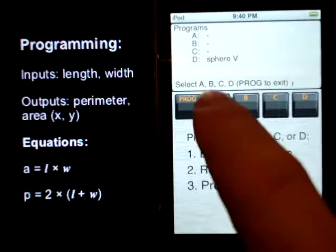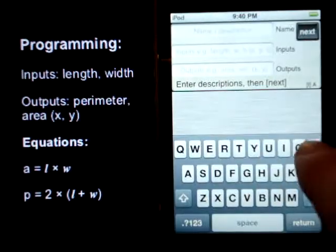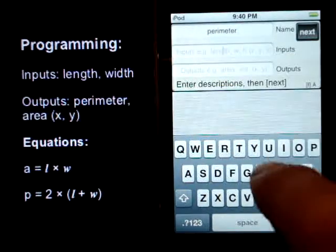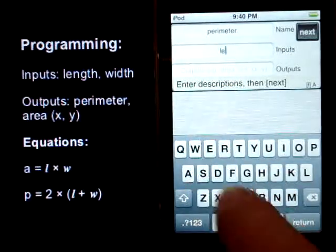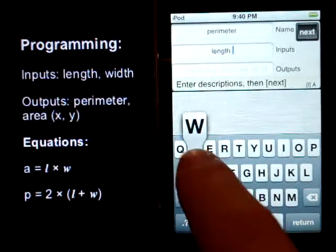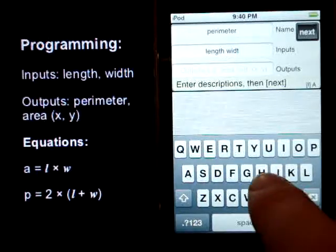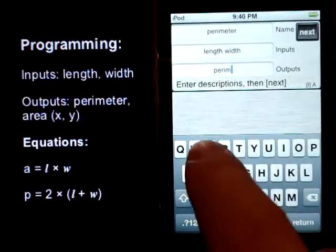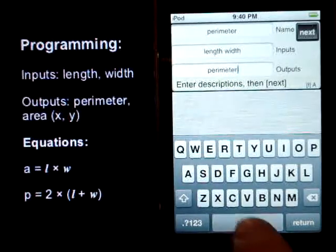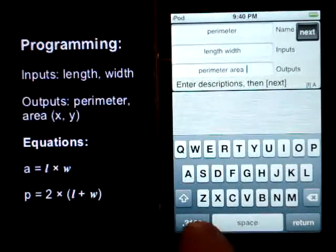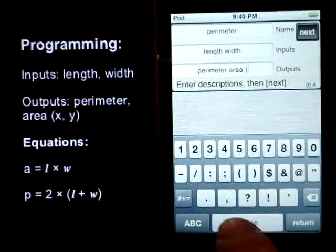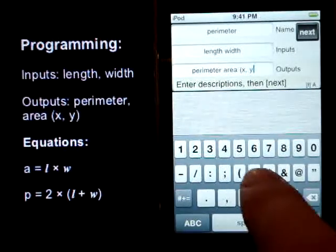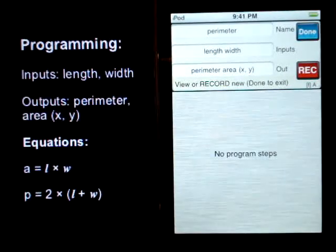F program, A is available. We'll call it perimeter again. We've got length and width as our inputs. And the outputs, perimeter and area. Alright. We're ready to program.